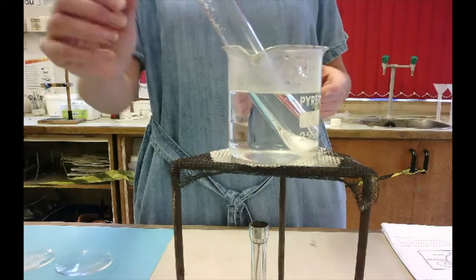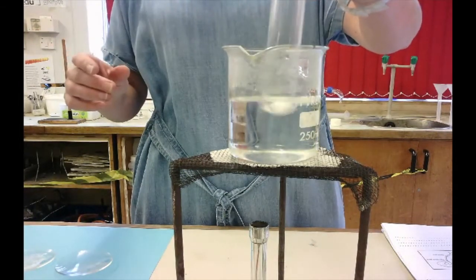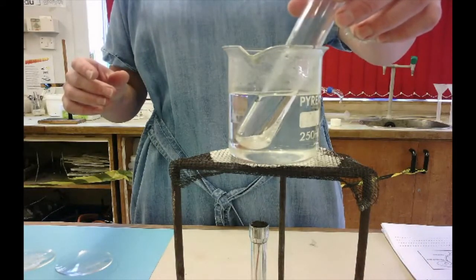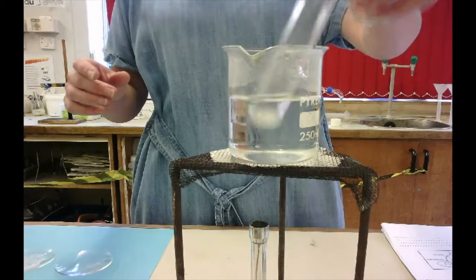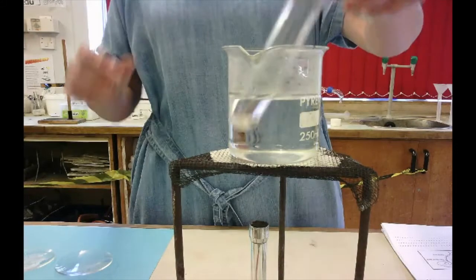I've knocked the Bunsen off now, but we've just got boiling water in there. I'm going to swirl this around so it melts a bit more quickly, and you can see that the salol is melting.